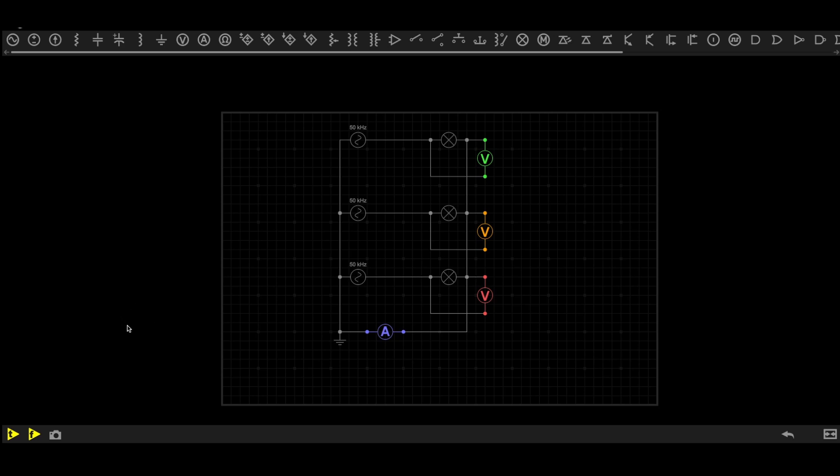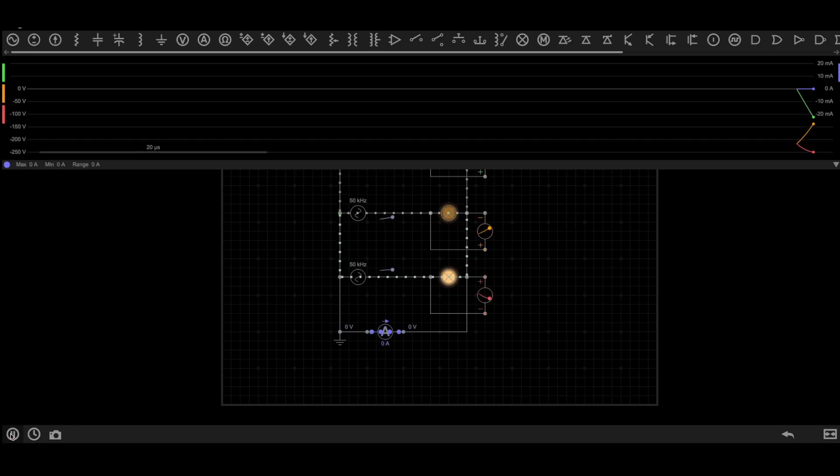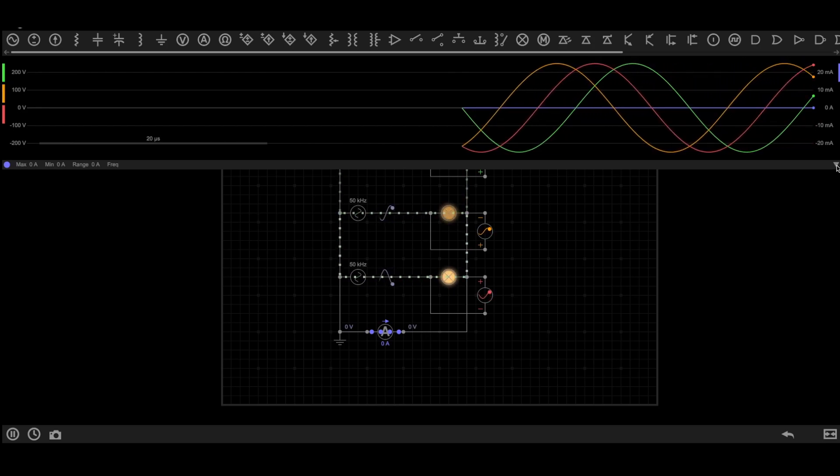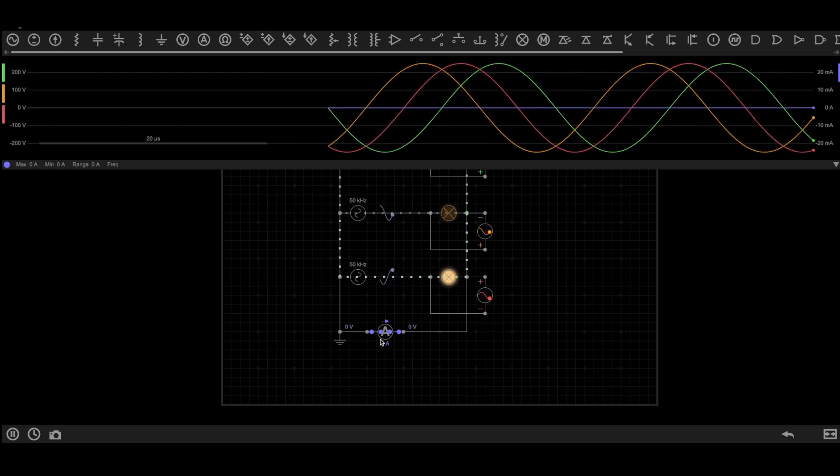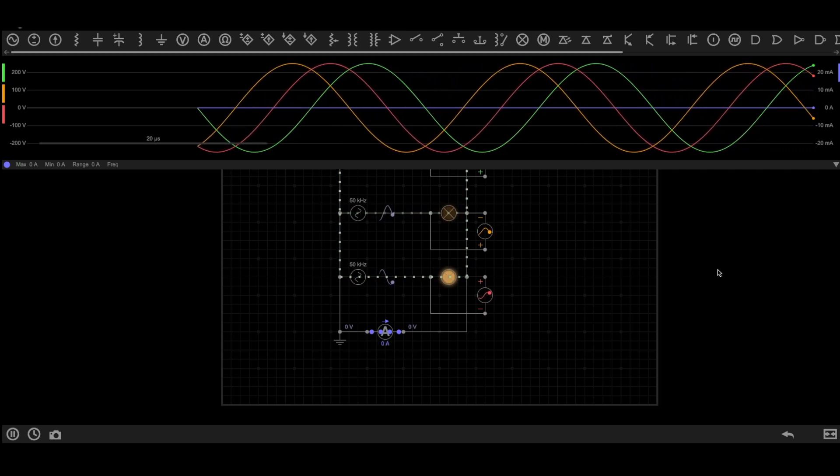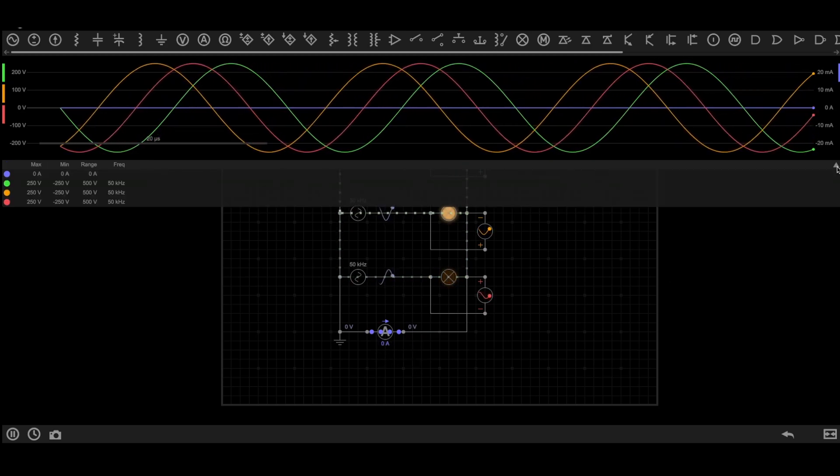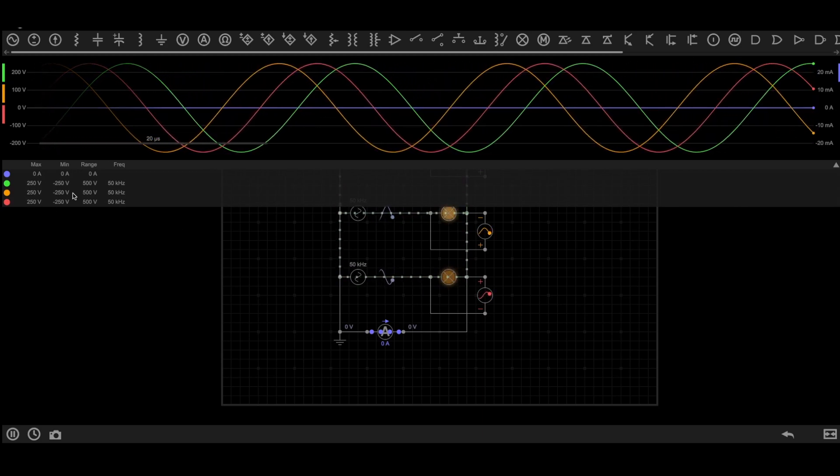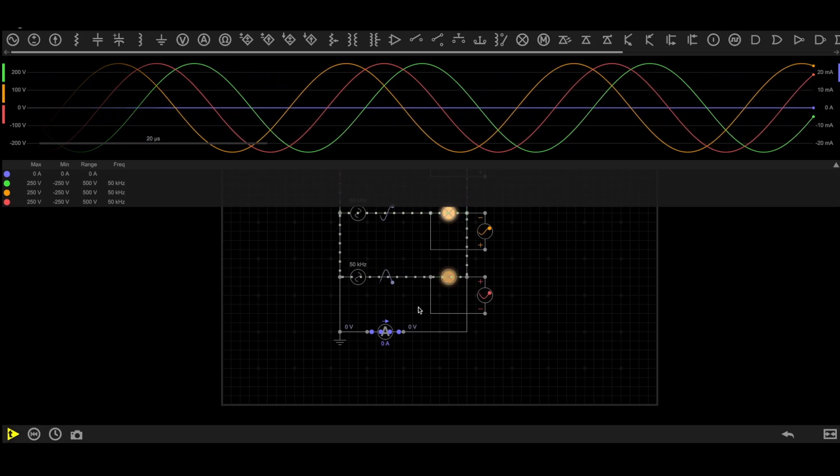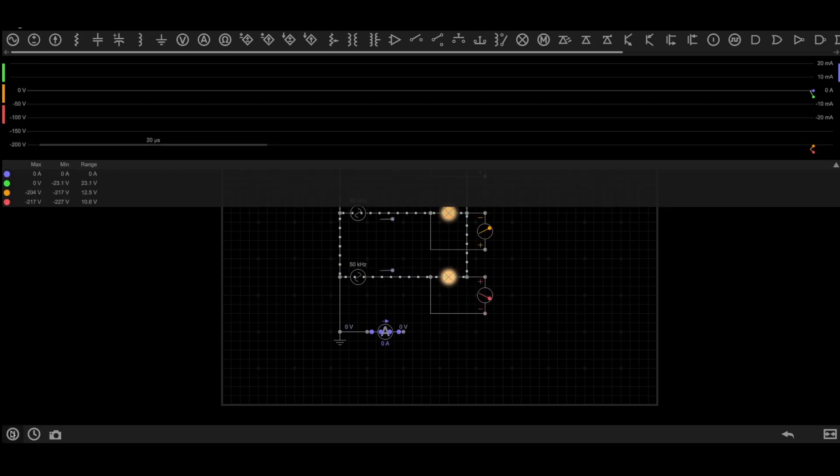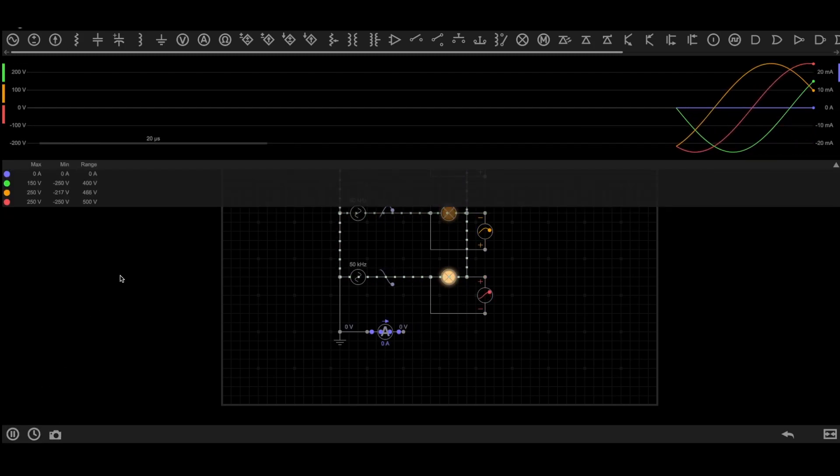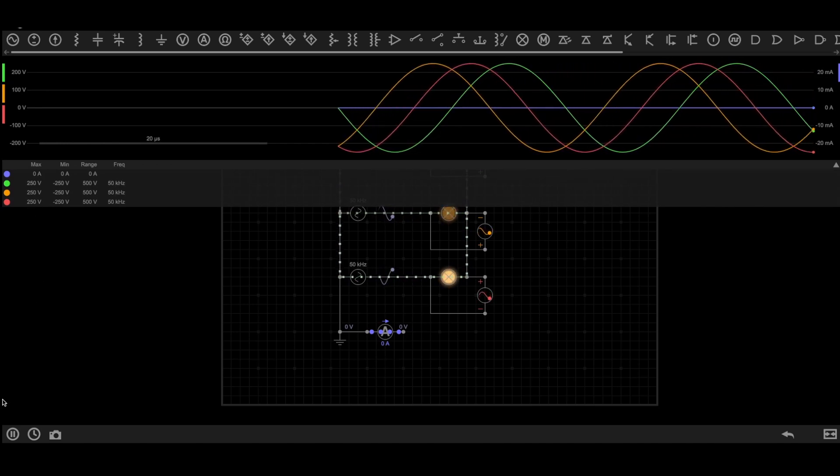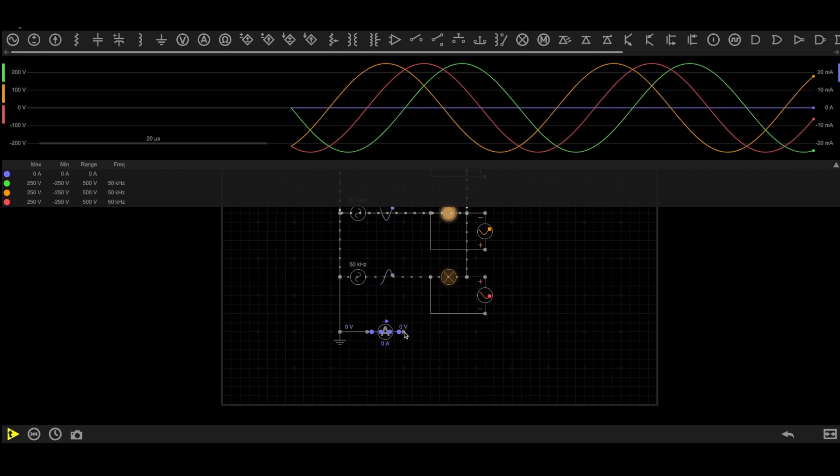Now let's start the simulation. In the first scenario, the load is balanced and as you can see, no current is flowing through neutral wire. The ammeter reads 0 amperes, which proves our statement. In this case, even if we remove the neutral wire it will not affect the circuit. Let me take out the neutral here. As you can see, even when the neutral is removed, voltage across each load is constant at 250 volts. Now let's connect the neutral back.